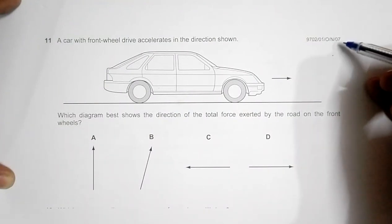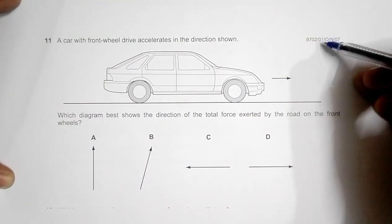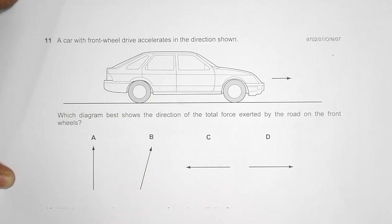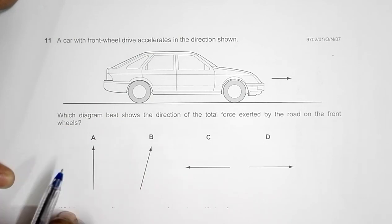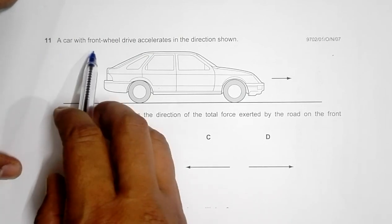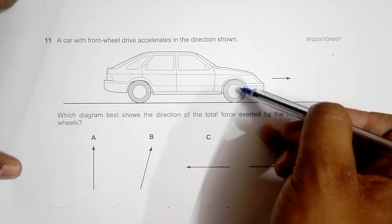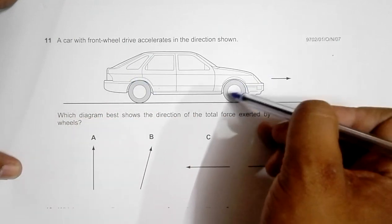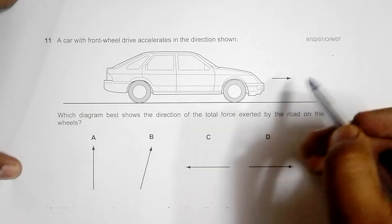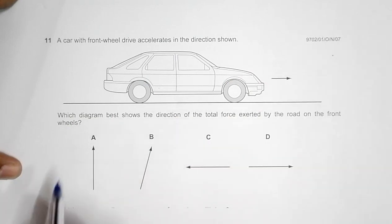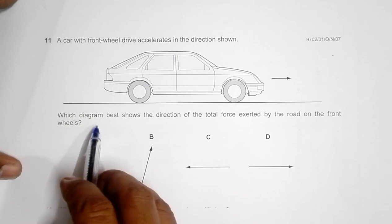This question belongs to the 2007 November paper one, question number 11. It says that a car with front wheel drive — meaning the force of the engine is mainly connected to the front wheel — accelerates in the direction shown. We have to find which diagram shows the direction of the total force exerted by the road.